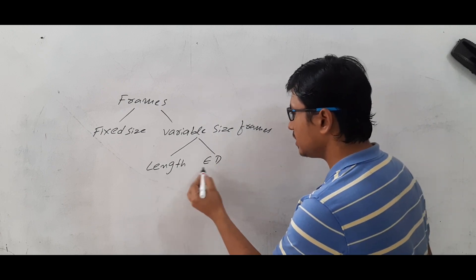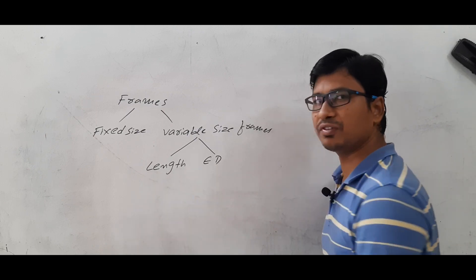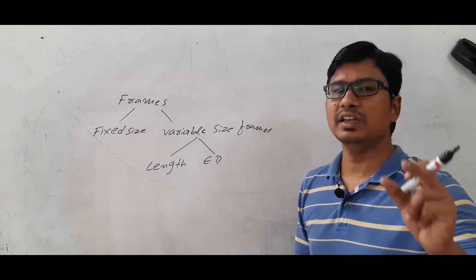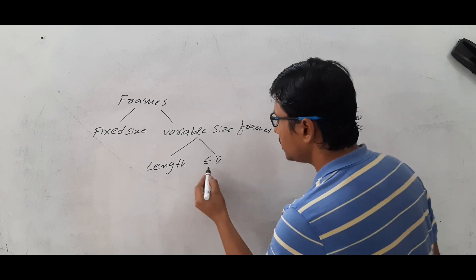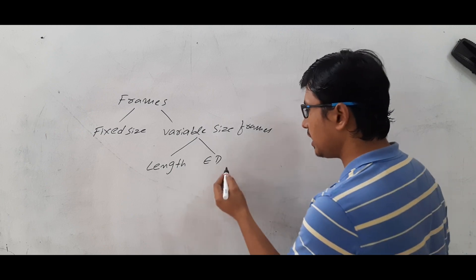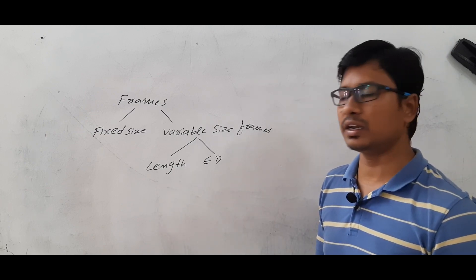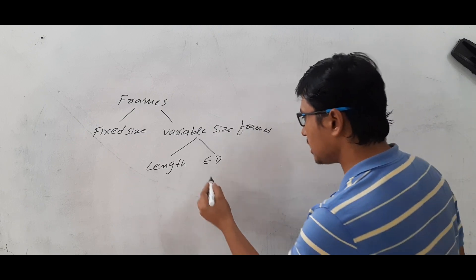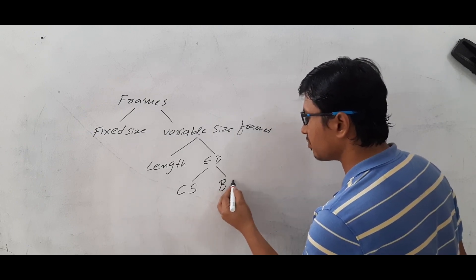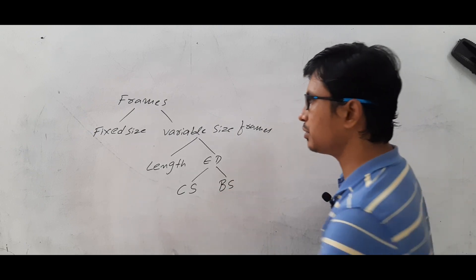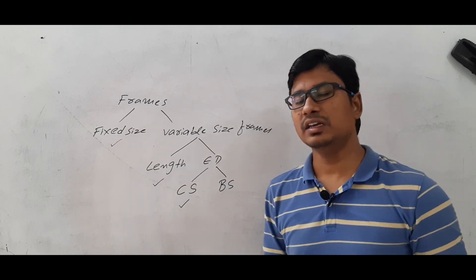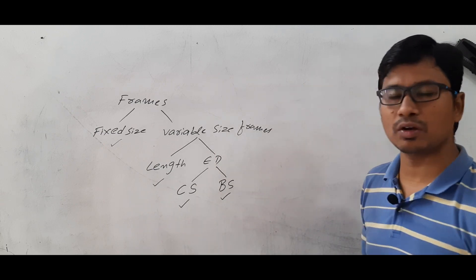We discussed the drawbacks of the length field — if the length field is corrupted, we cannot identify the end of the frame correctly. We also discussed that the length field concept is used in Ethernet and the end delimiter concept is used in token ring. The end delimiter is classified into two types: character stuffing and bit stuffing. I covered fixed size length and character stuffing previously, and in this video I want to discuss bit stuffing.